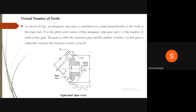Virtual number of teeth: as shown in figure, an imaginary spur gear is considered in a plane perpendicular to the tooth at the large end. RB is the pitch circle radius of this imaginary spur gear and Z' is the number of teeth on this gear — that is, Z' is the imaginary or virtual number of teeth. This gear is called the formative gear, and Z' is called the virtual or formative number of teeth.